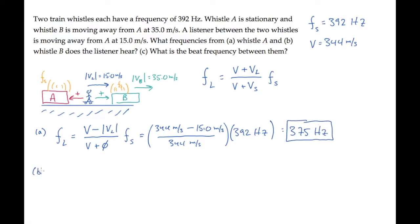For train B, the positive direction is to the right. That's the direction of both the listener and the source, the whistle on train B, so both of those pick up positive signs. Substitute all the known values and calculate to find that frequency is 371 Hz.